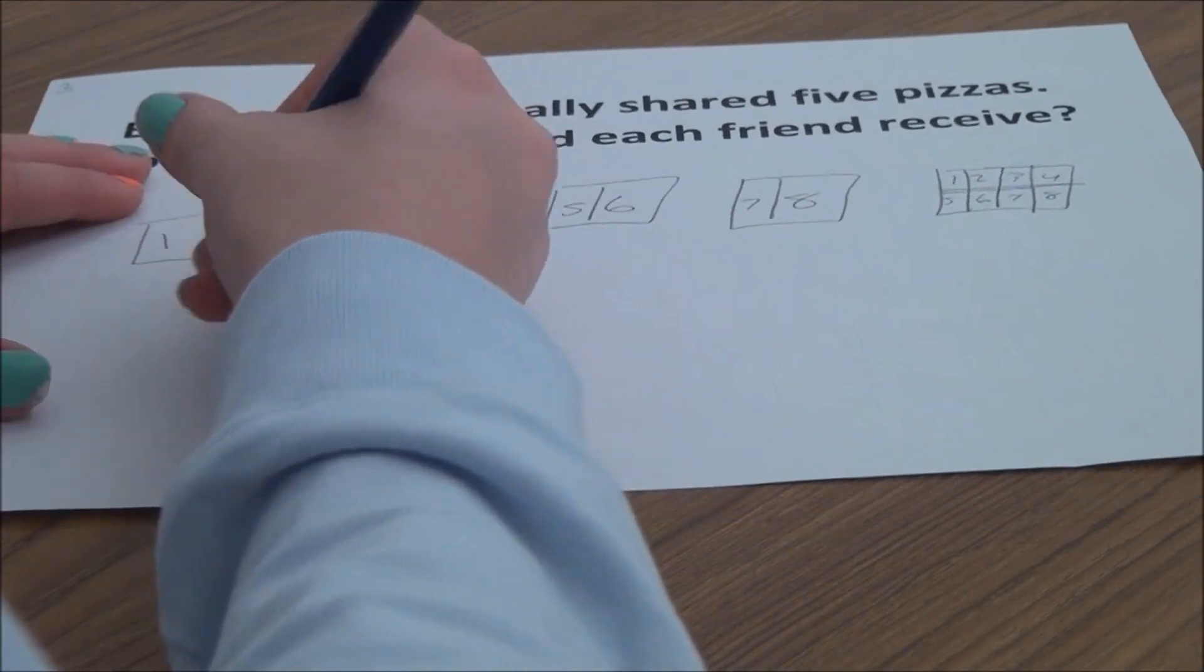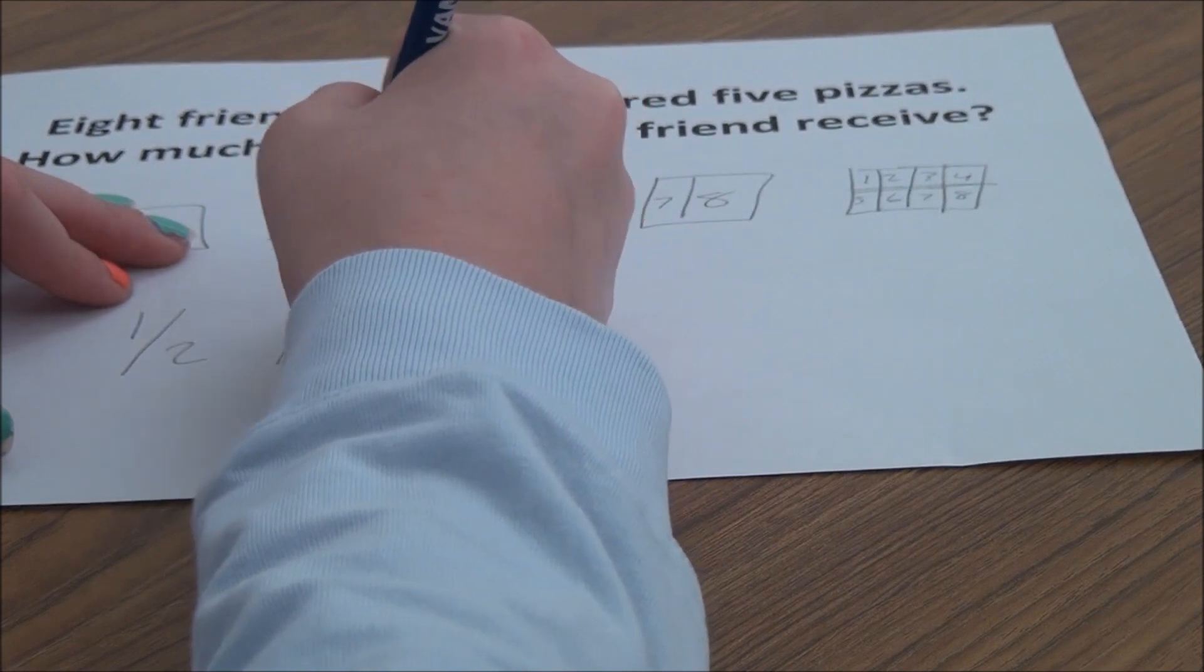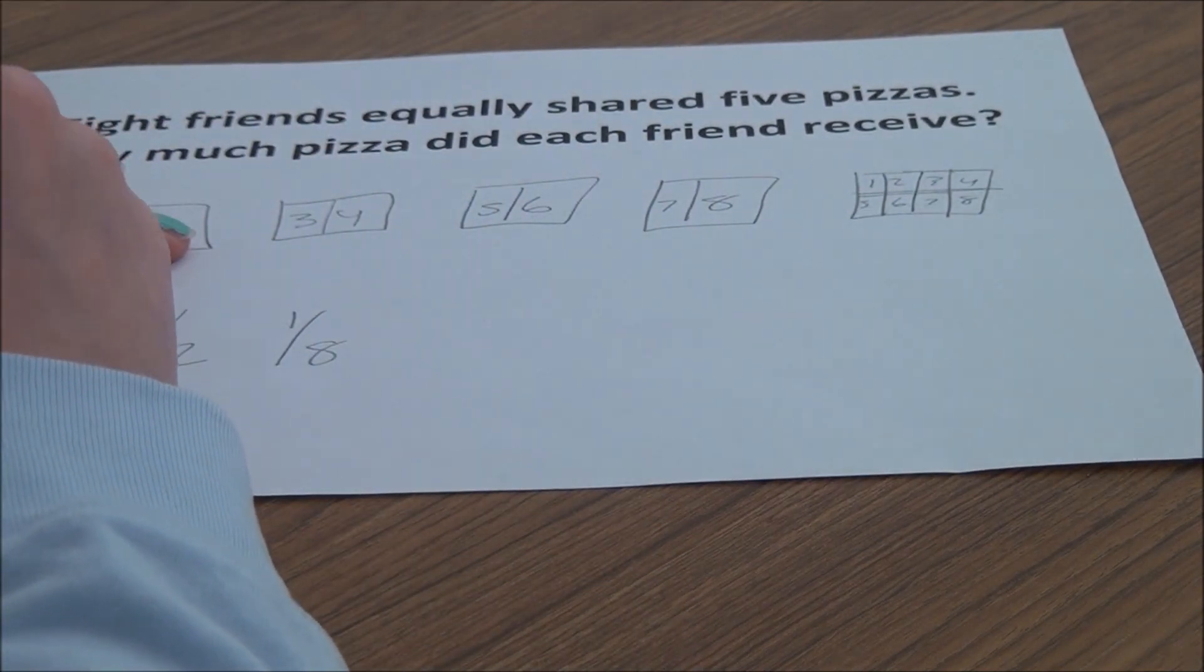So each friend you get one half and one eighth. How would I do that?